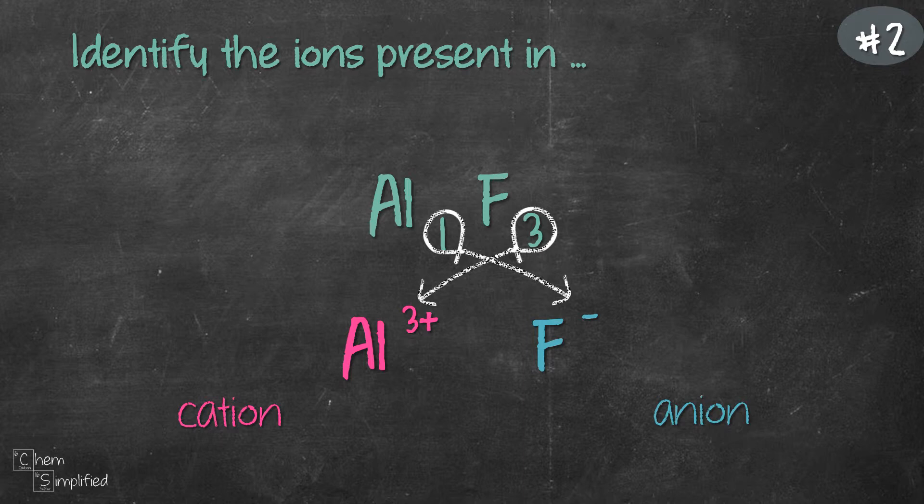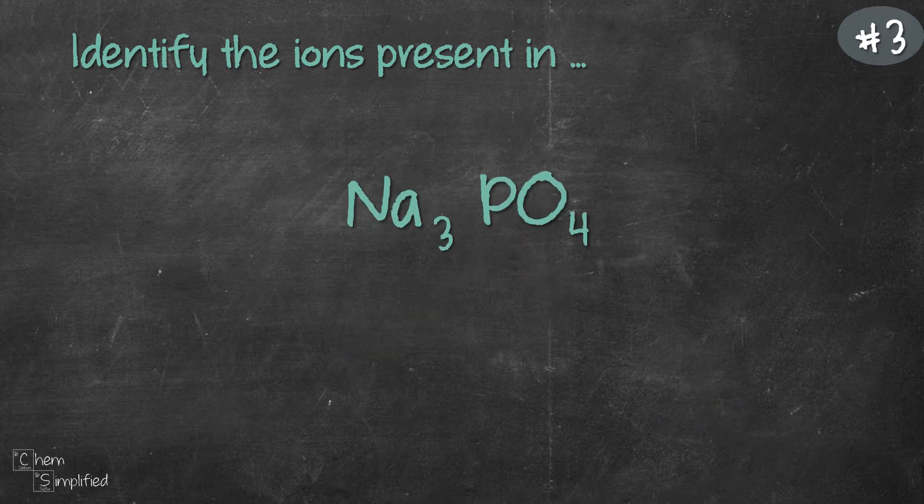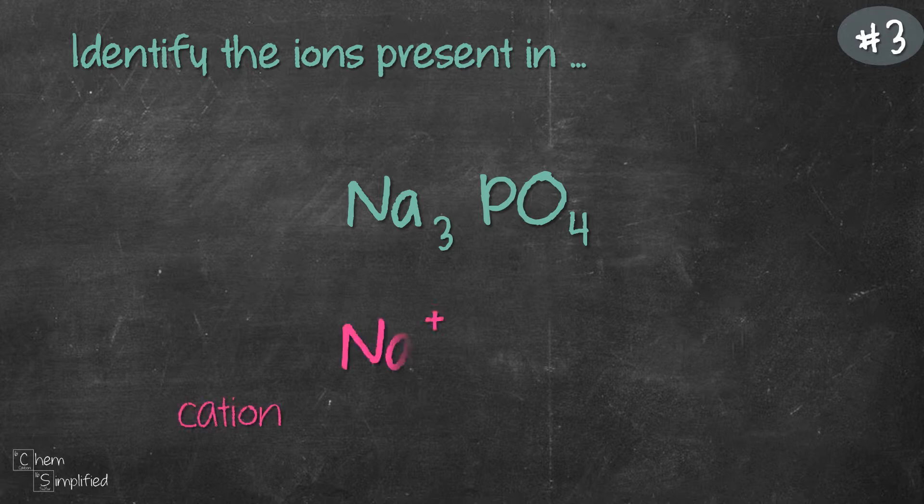These two examples that we've worked with all consist of monoatomic ions, meaning ions containing only one atom. We're going to try working with ionic compounds containing polyatomic ions like this. We have Na3PO4. Na is the metal which means it will become Na+ cation. PO4, that's the polyatomic part.